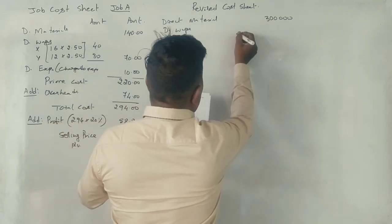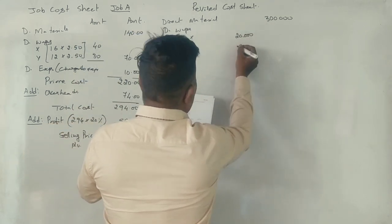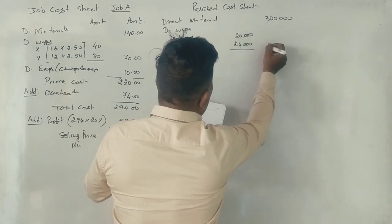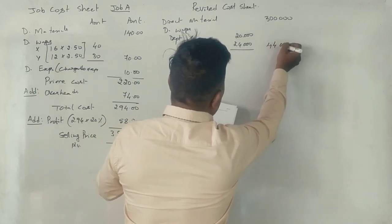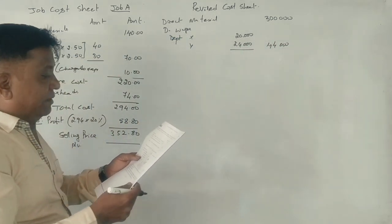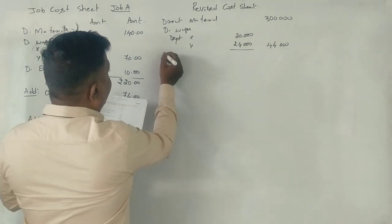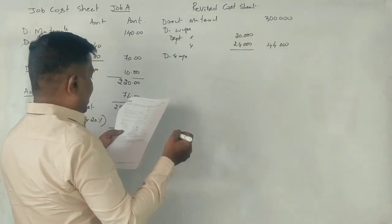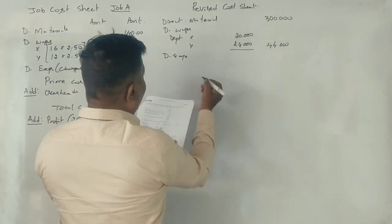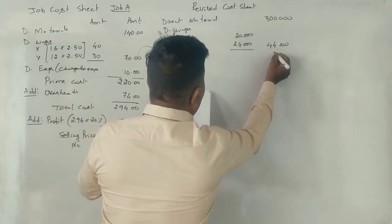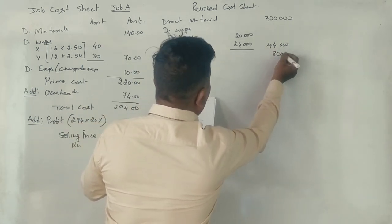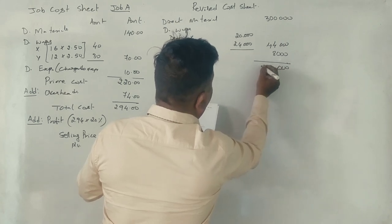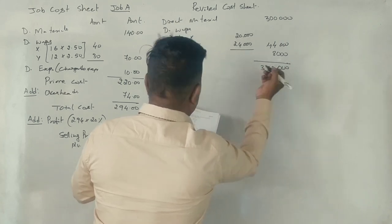The total is 20,000 and 24,000, giving a combined total of 44,000. Direct expenses — store expenses are 8,000, bringing the total to 3,52,000.